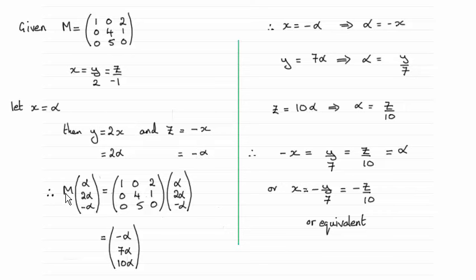And so I've done M times x, y, z, written in terms of alpha. And when you do M times that vector, you end up with minus alpha, 7 alpha, and 10 alpha.